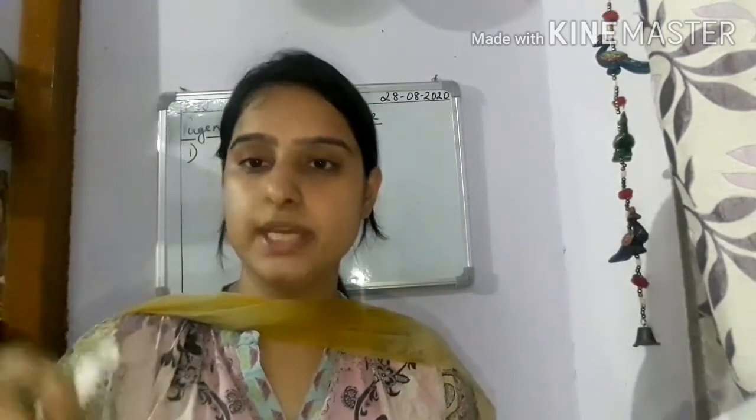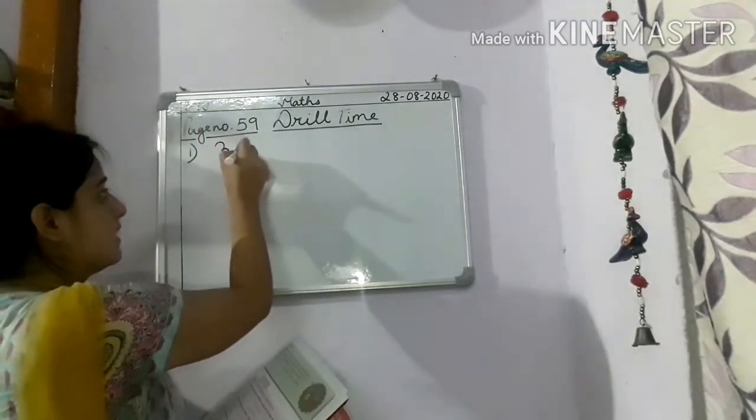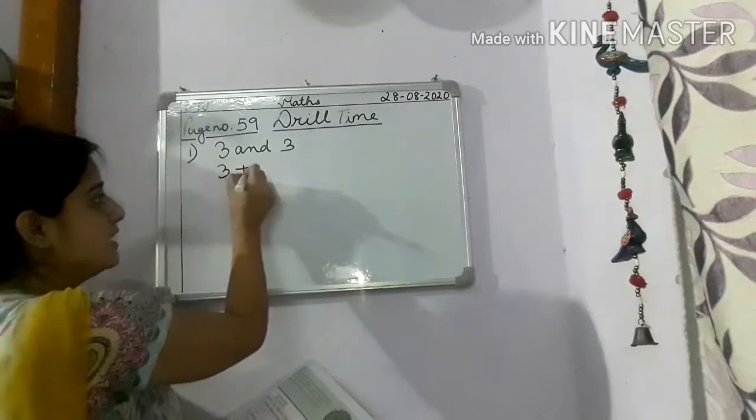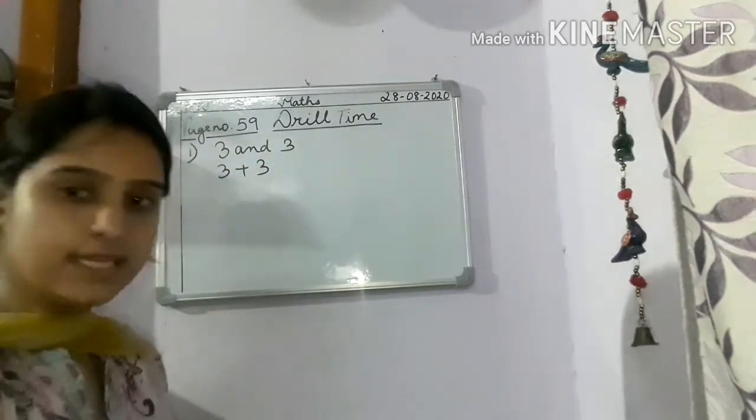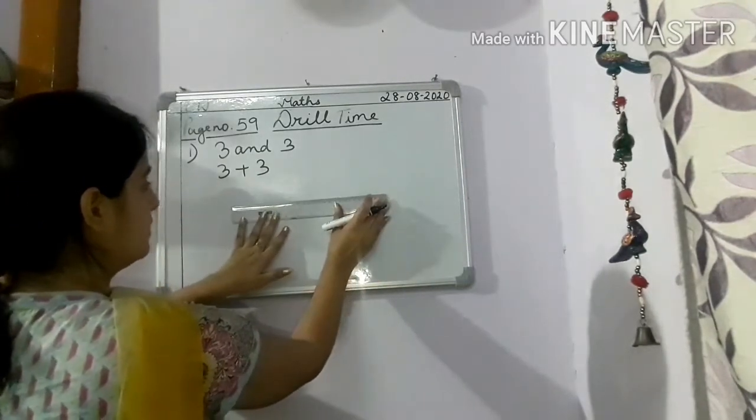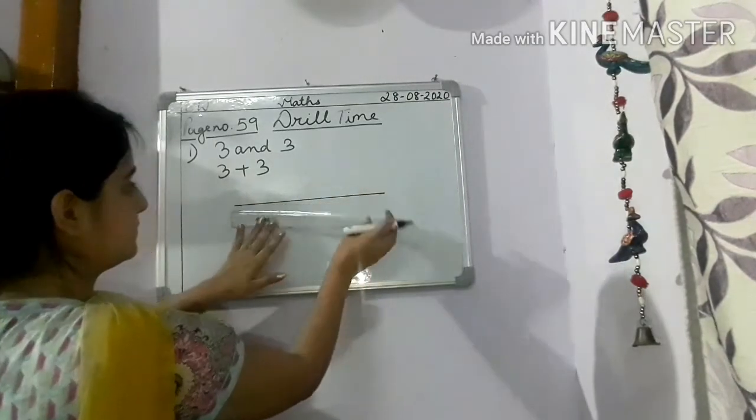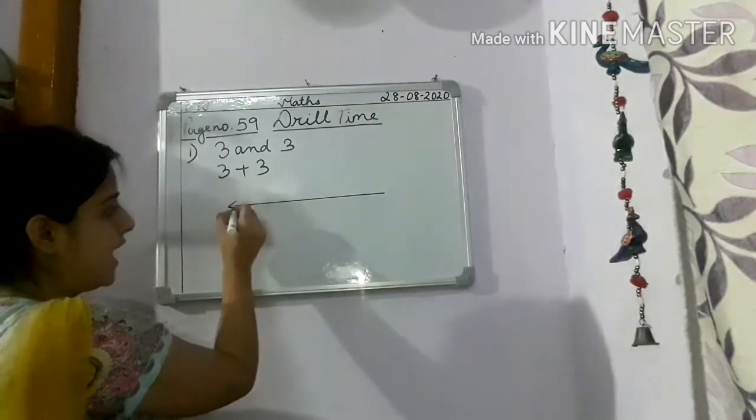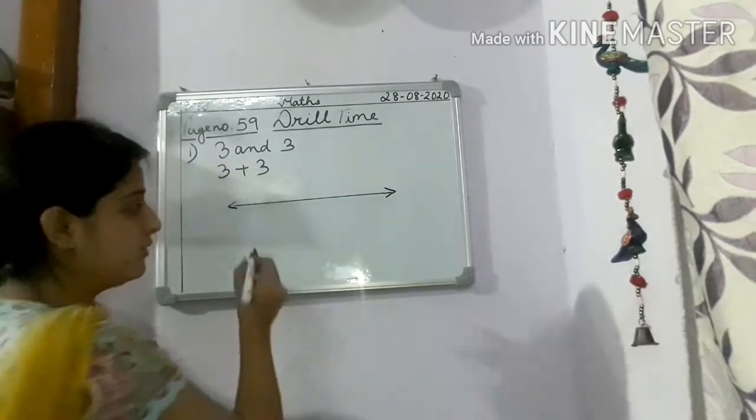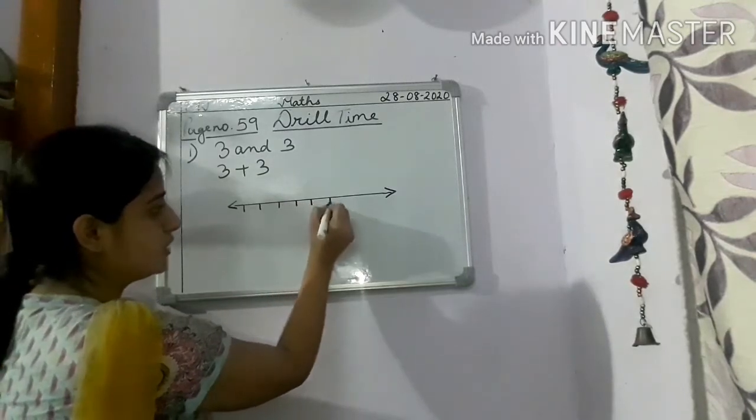So let's do children. The first one, add 3 and 3. 3 and 3 means children 3 and 3, that means 3 plus 3. So let's do, draw one line children. Draw one line. Then give arrows on both the side. Now children, give equal space. Put lines.